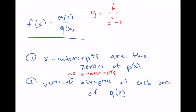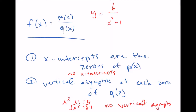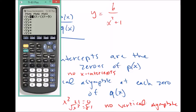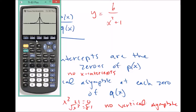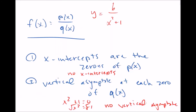For the vertical asymptote, we look at the bottom and set it equal to zero: x squared plus 1 equals zero, so x squared equals negative one. That gives an imaginary number — because there are no real zeros, there's no vertical asymptote. Graphing confirms this: the graph gets close to the x-axis but never crosses it, and there's no vertical line it fails to cross.